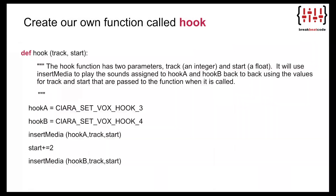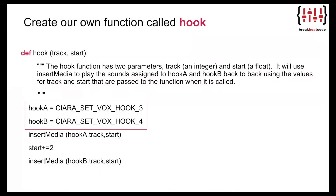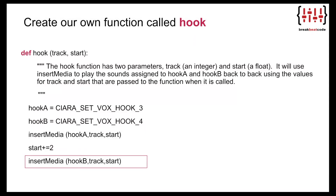Now we'll create a function in your sketch that we can reuse in a music track. We will create a function called 'hook' which will play the hook from the song set by Sierra. We start with: 'def hook(track, start):'. The doc string shows the hook function has two parameters — track and start — and it uses insert media to play the sounds assigned to hook_a and hook_b back to back using the values for track and start passed when the function is called. In the block of code we have two variables, hook_a and hook_b, and use insert media to play hook_a on the specified track and start measure. On the next line we increase start by two and then call insert media again using hook_b and the new value for start.